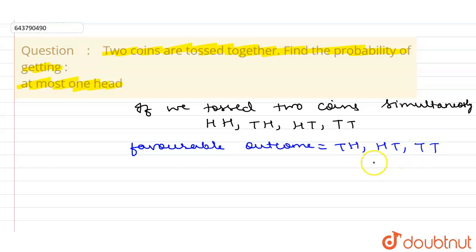So here, the total number of outcomes is four, and the favorable number of outcomes is three.